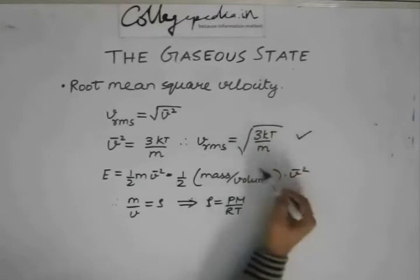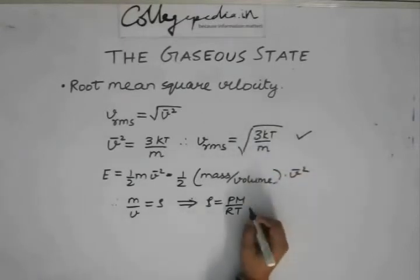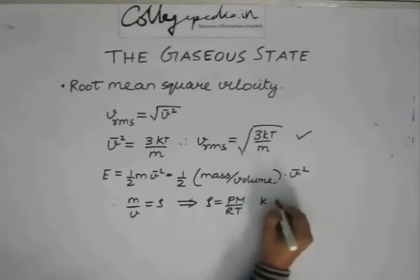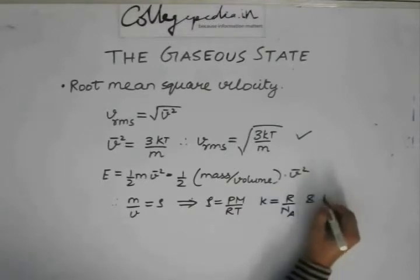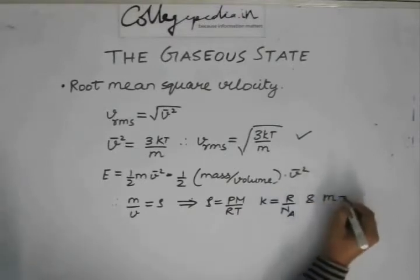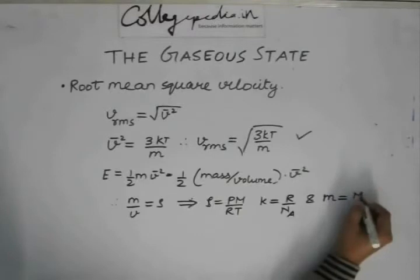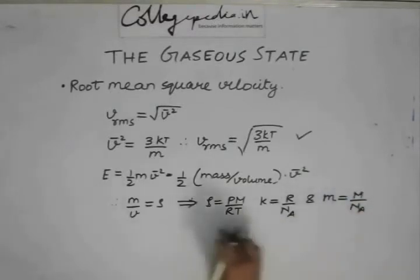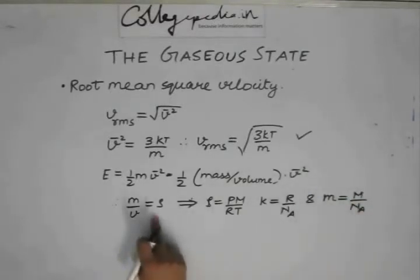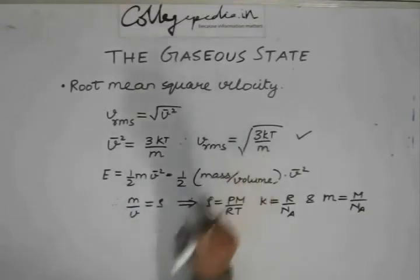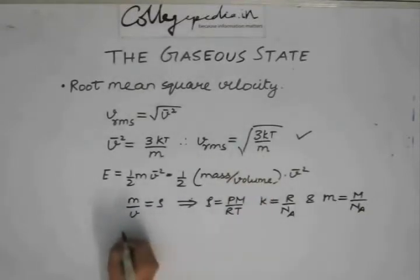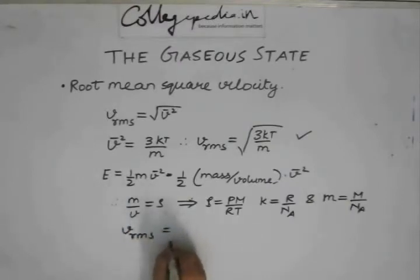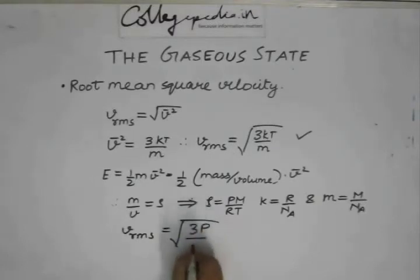If we use this formula and this here, also we need to replace K with this. And we have to know that small m is going to be nothing but capital M by NA. Using these three and this, knowing this, we replace this and from there, we get Vrms equal to root 3 P by rho.